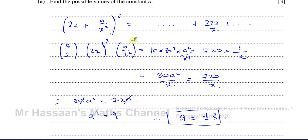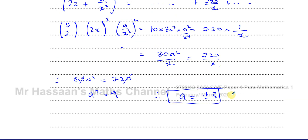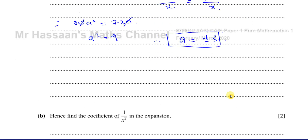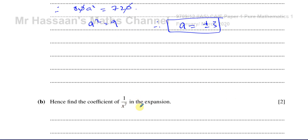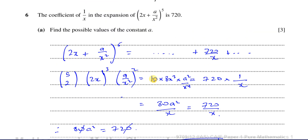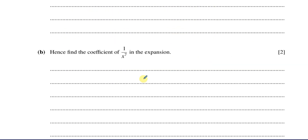You know these must be positive integers that add up to 5, so you can very quickly get to the answer by trying different numbers. You can spot it: x cubed on top and x to the power of 4 when you square x², giving 1/x. That's the answer to part A of this question — three marks. Now for part B, it says: hence find the coefficient of 1/x^7 in the expansion.